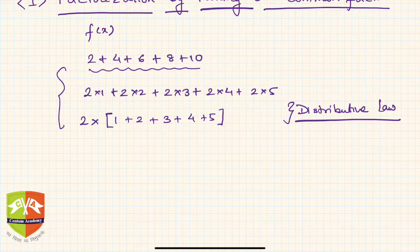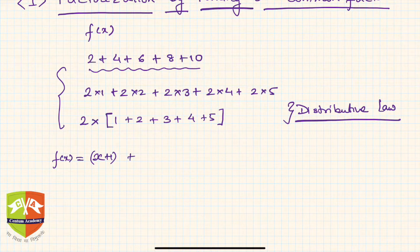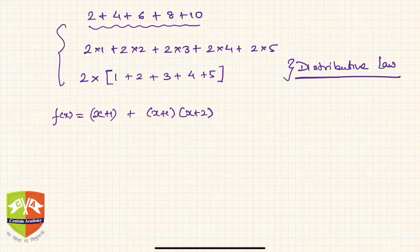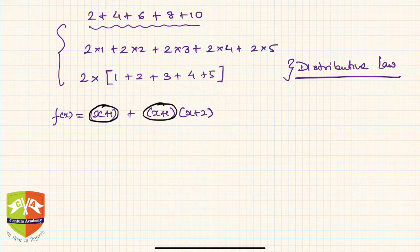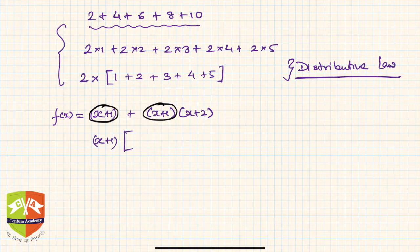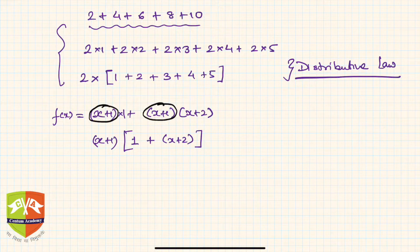Similarly, in algebra, if we have f(x) = (x+1) + (x+1)(x+2), there are two terms and we can see there is a common factor. The common factor in both terms is (x+1). If we pull out (x+1) as a common factor, in the first term (x+1) is nothing but (x+1)×1, so 1 is left. In the second term, (x+2) is left.